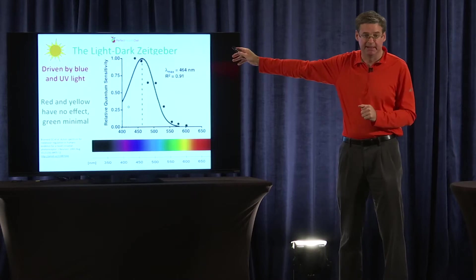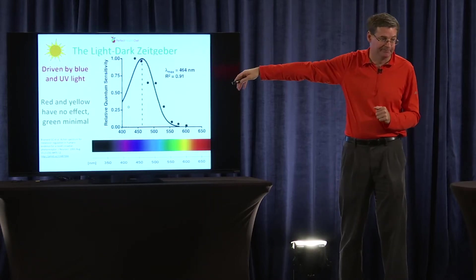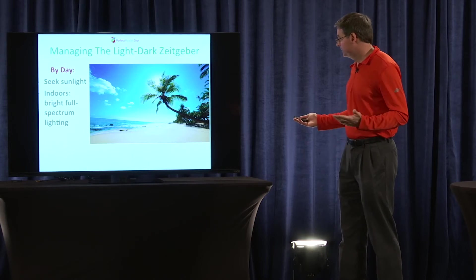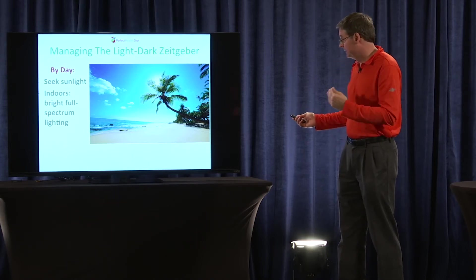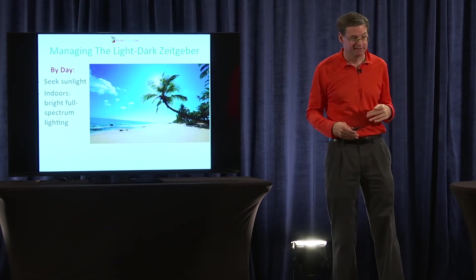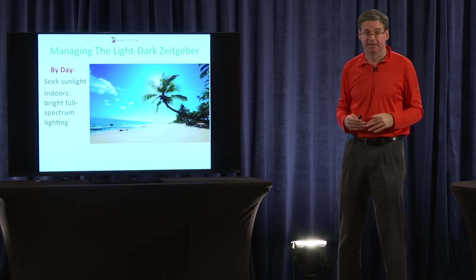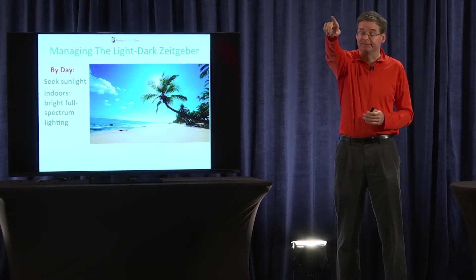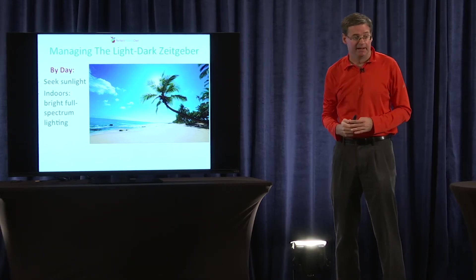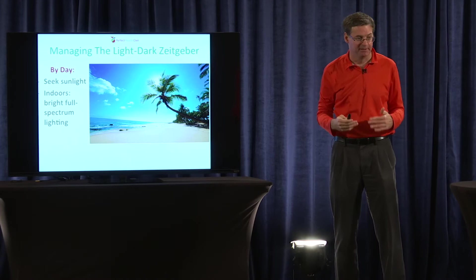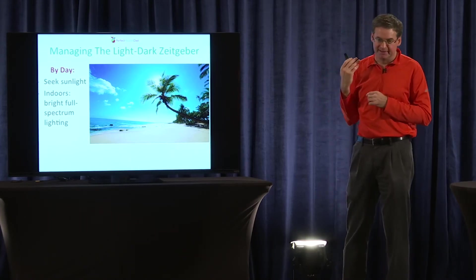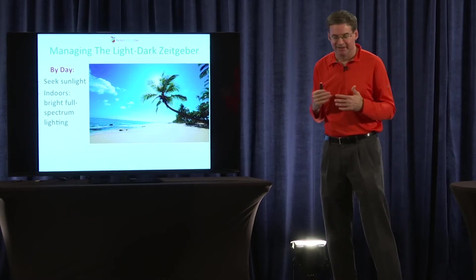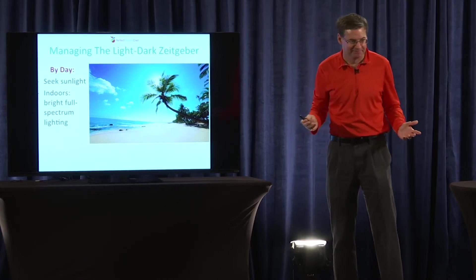So whenever you're exposed to blue light, it's telling your body it's daytime. So by day, you need to get sunlight. And when you're indoors during the day, you need to expose yourself to bright, full-spectrum lighting. Now, what kind of lighting do people actually buy? If you look at these lights, you'll see they have a yellowish tinge to them. And that's the worst possible kind of lighting to buy. Don't buy anything that says cool white bulb.